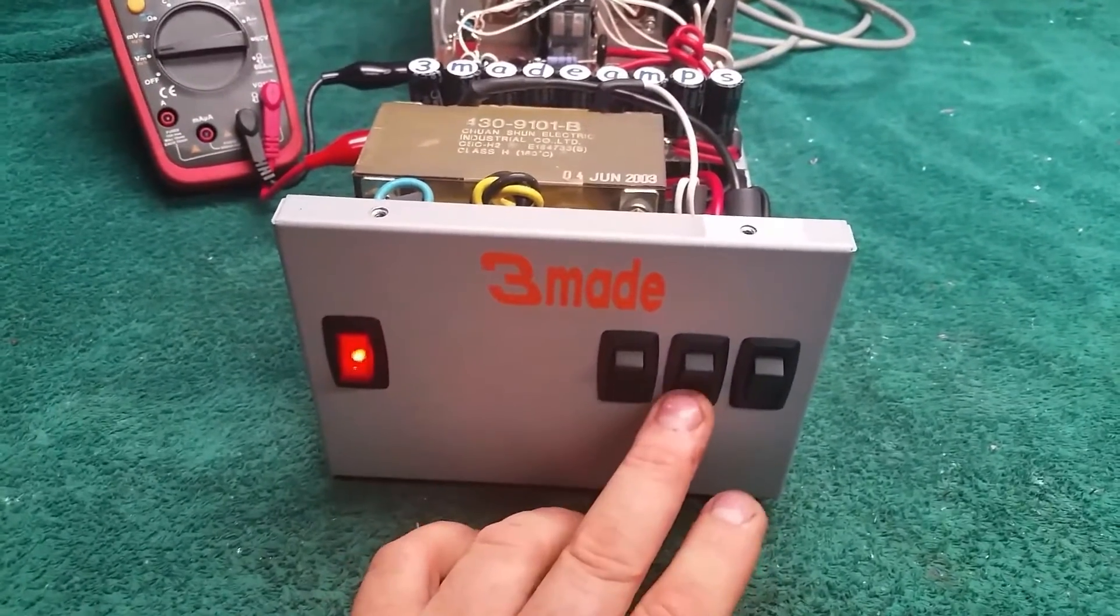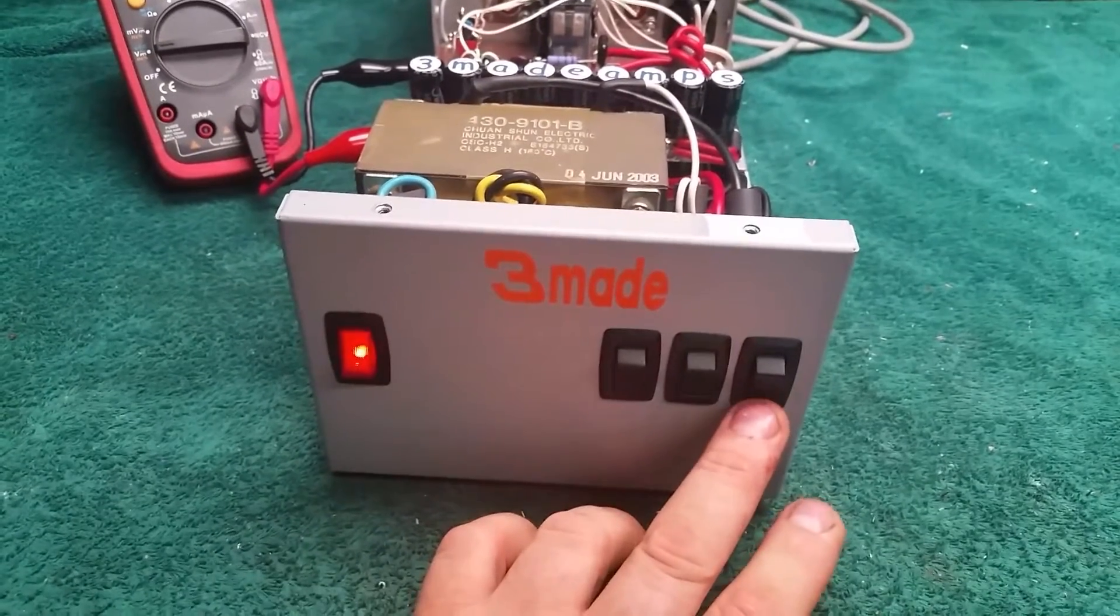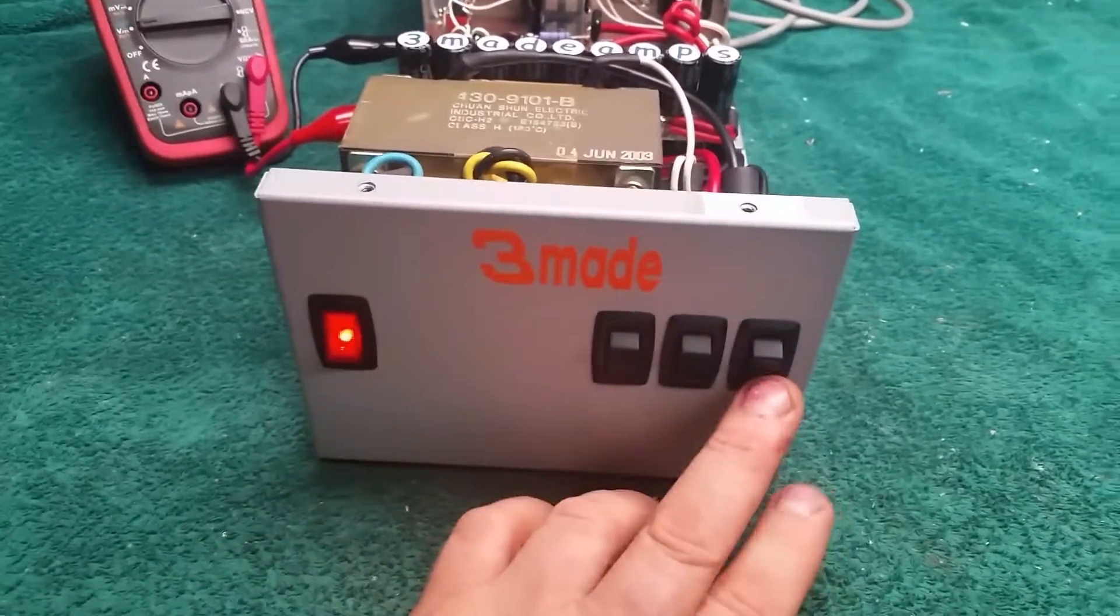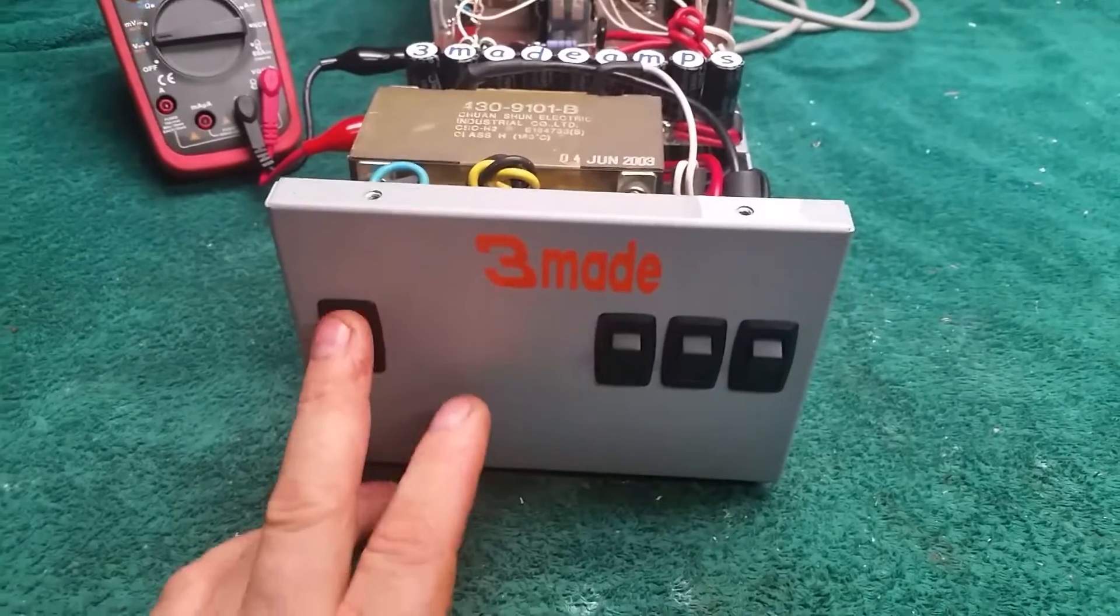It's got the preamp switch here, sideband switch here, on and off right here for the amp. It turns the transform on.